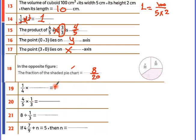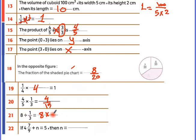1 over 4 times something equals 1. For 4 over 15 divided by 8: change to multiplication with reciprocal, giving 3 over 1. So 8 times 3 equals 24.